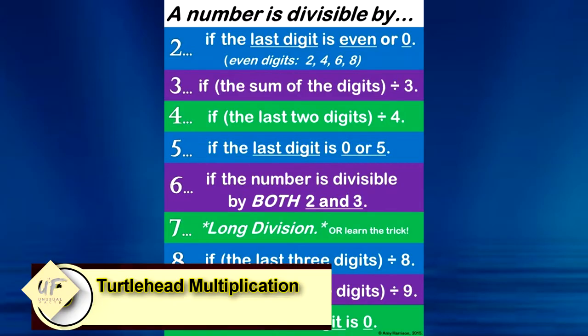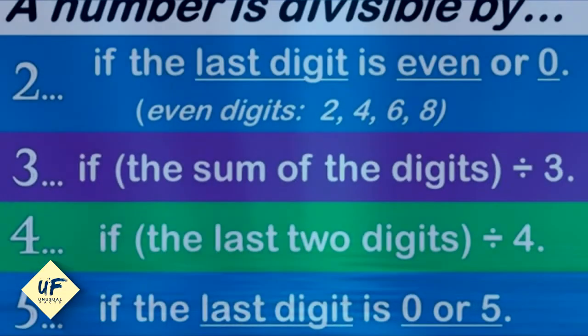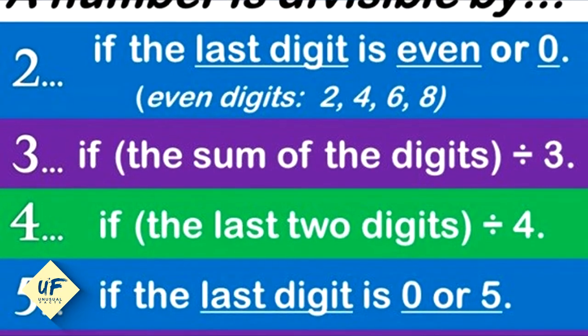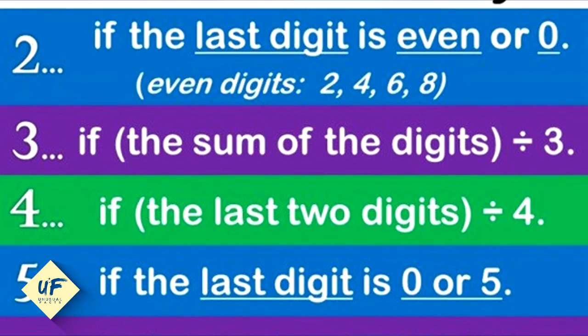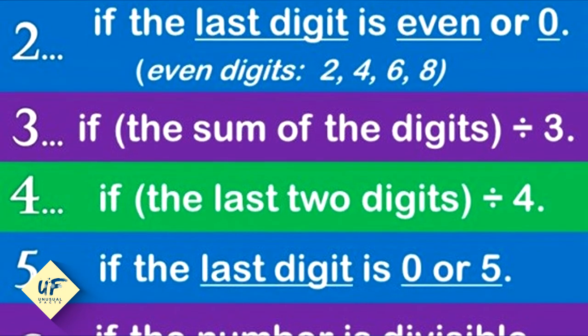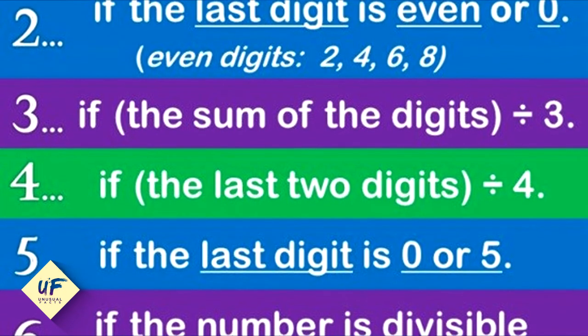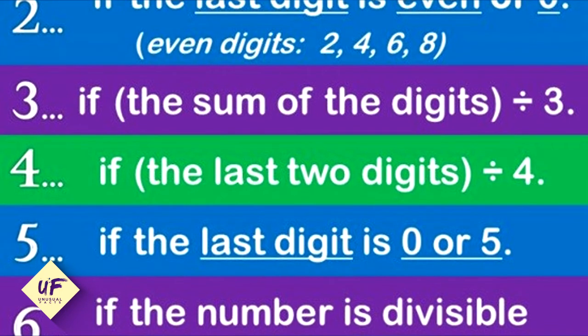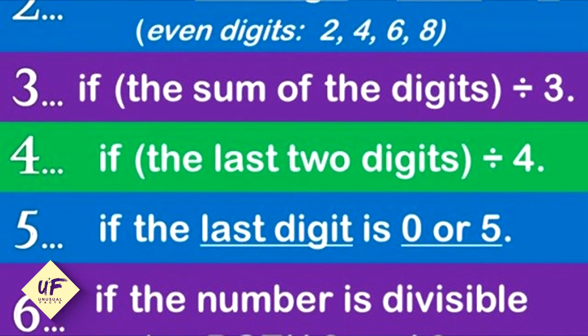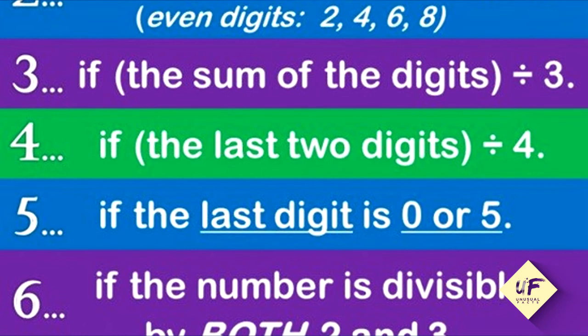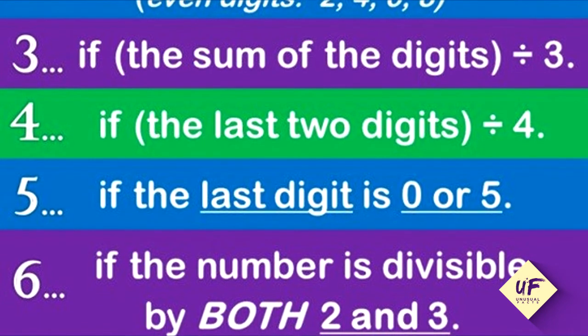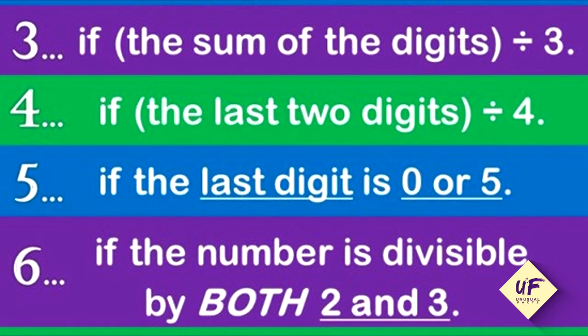Number 10: Divisibility Rules. A number is divisible by 2 if the last digit is even or 0. Even digits: 2, 4, 6, and 8. A number is divisible by 4 if the last two digits are divisible by 4. A number is divisible by 5 if the last digit is 0 or 5.